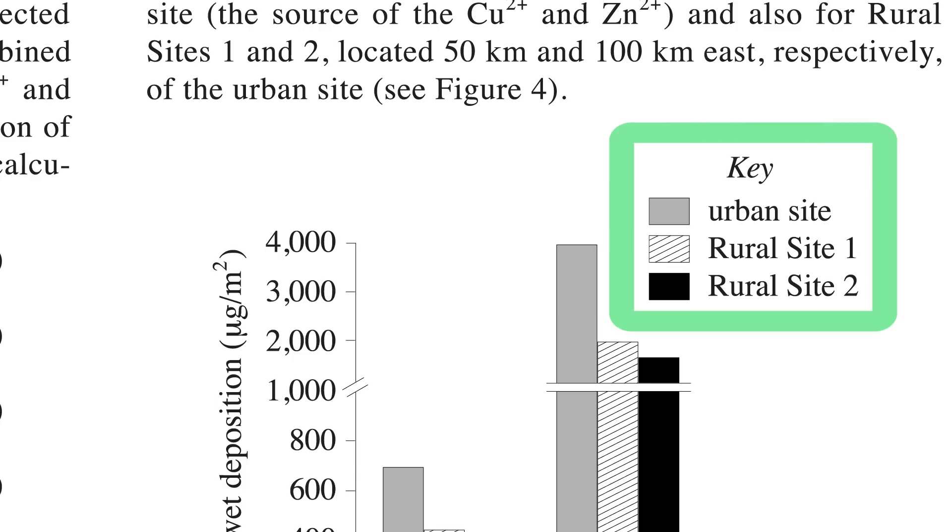We are at number eight, our last ACT science tip: look at the keys on your charts before you look at anything else in the passage. The keys will tell you big picture what you need to be thinking about. For example, looking at a passage here, the key gives us 'urban site,' 'rural site one,' and 'rural site two.' Right off the bat, before I've read anything, I know I'm likely comparing urban areas to rural areas. Keeping that in mind will lead my reading and analysis of the charts toward the most important variables.